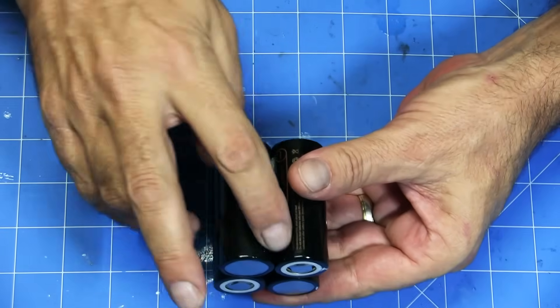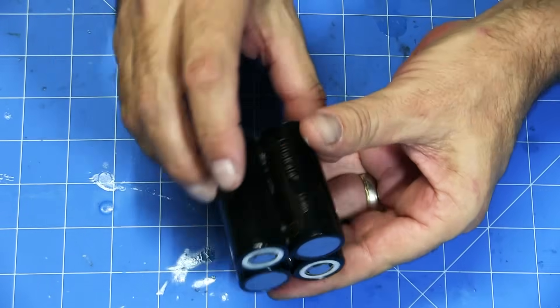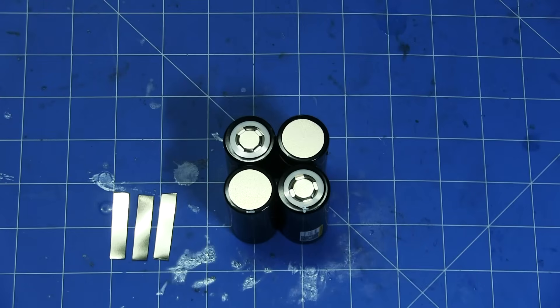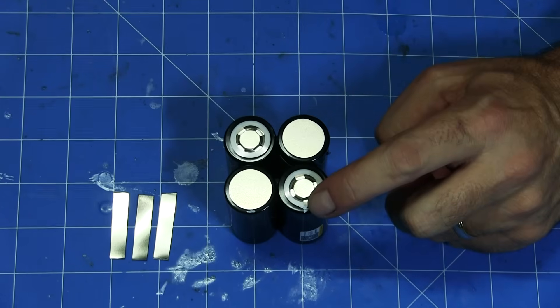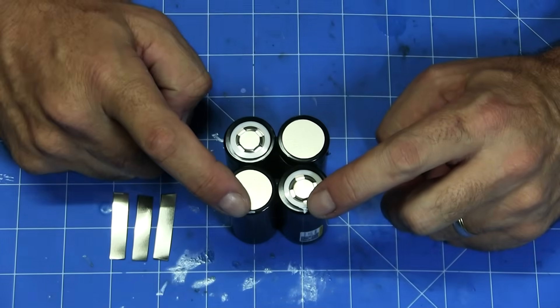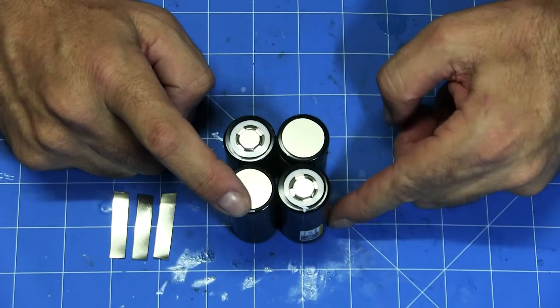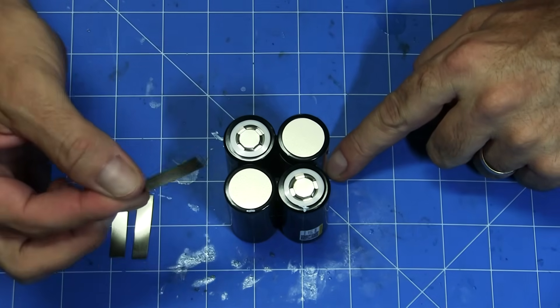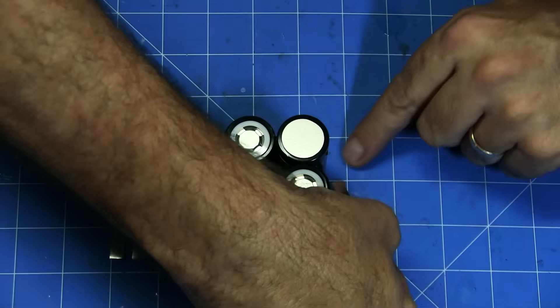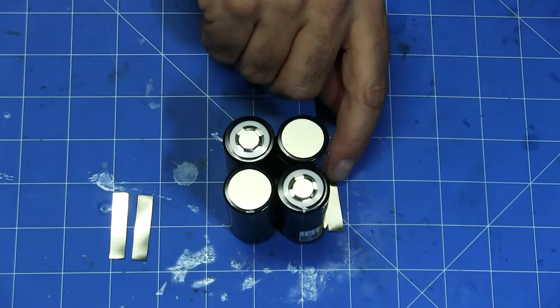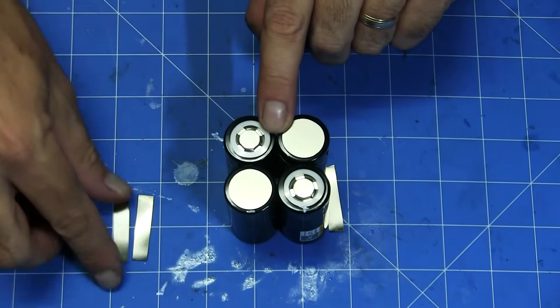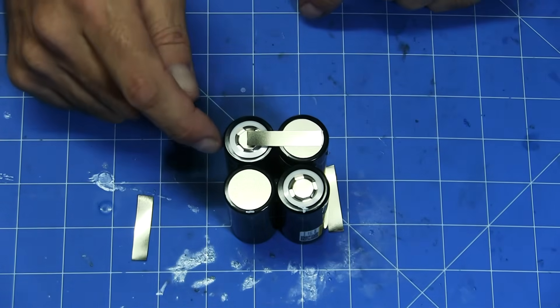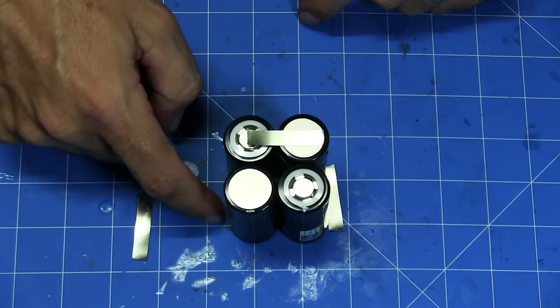We can now hot glue the pack together, creating the four cell in preparation for spot welding the nickel plating. Our nickel plating will run in this configuration starting with our positive and negative. It will go down the first cell, we'll put a plate across the bottom here. The current will then come up to the top and go across where we'll put another plate. From there it will go back down and across the bottom where we'll put our final plate.